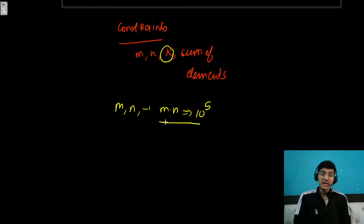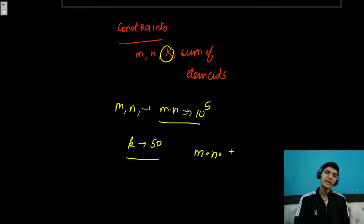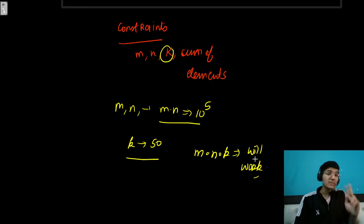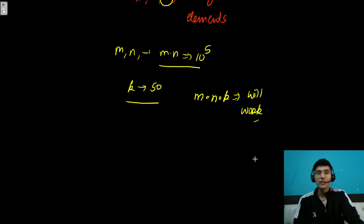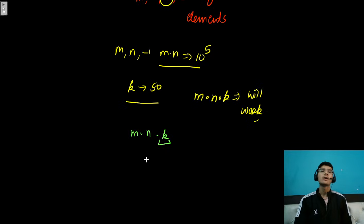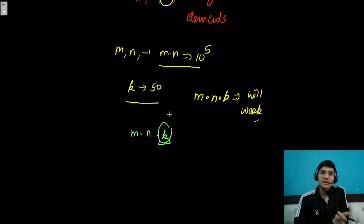But k is 50 here, and that gives a hint that our time complexity of m×n×k will work. We have to track the sum till the end, so what should we maintain — either the sum or something else? If you maintain the full sum it won't be sufficient, because when making a DP state you always have to check that it fits within your time complexity. The full sum is too large.